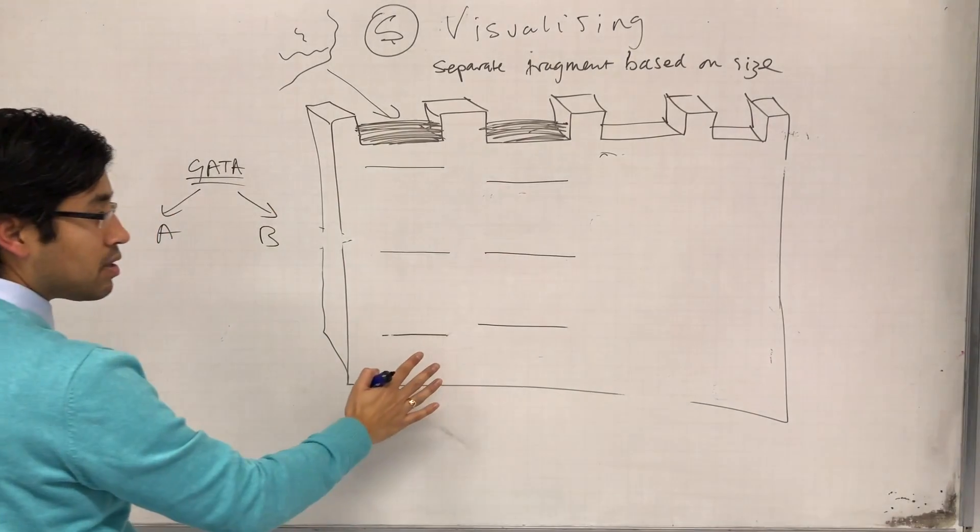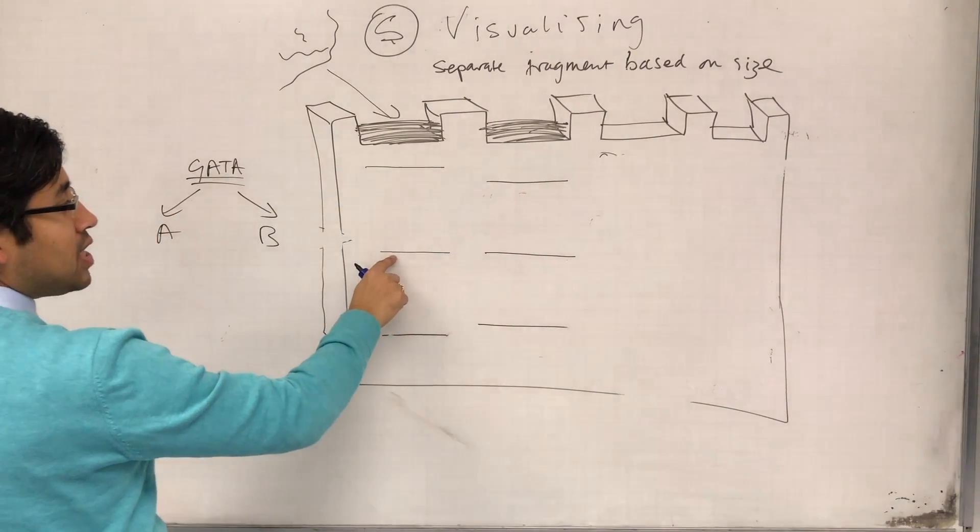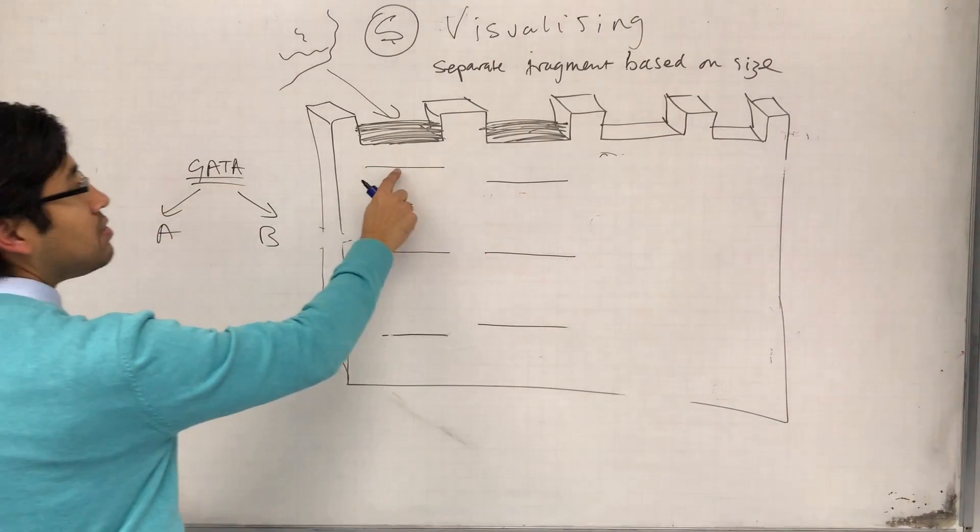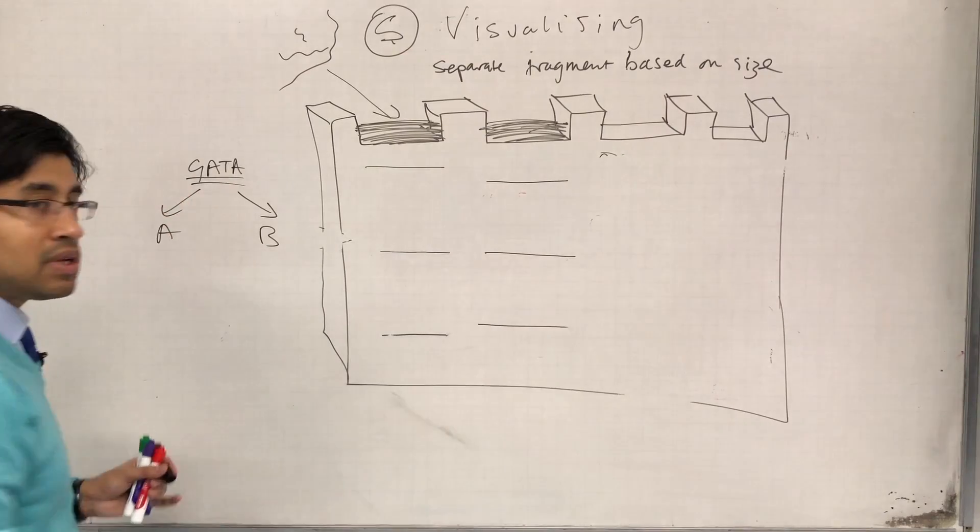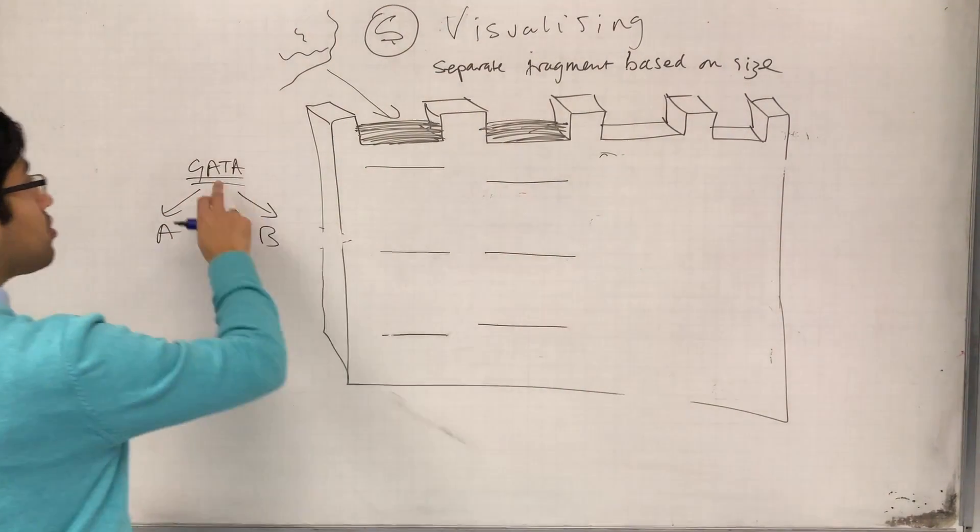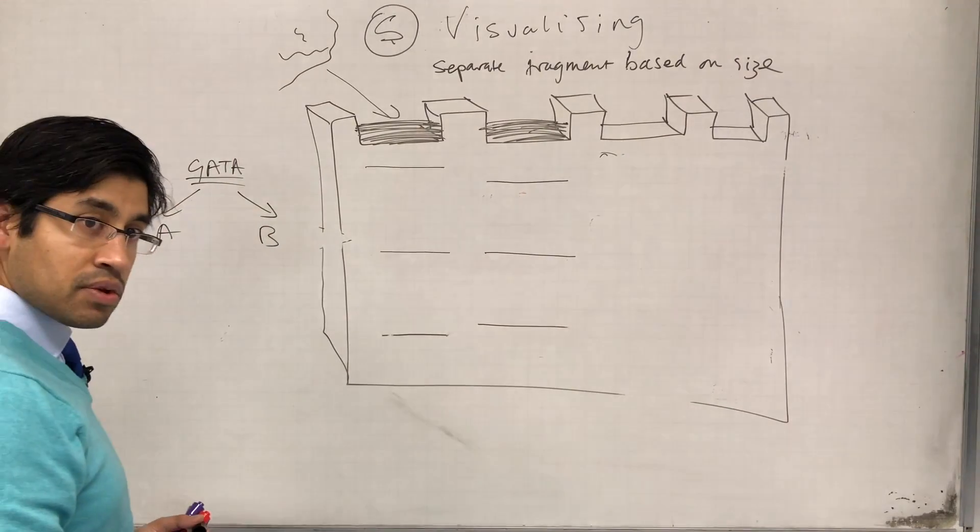Now, I've got these bands on my gel. Now, if GATA is in this sequence, then they're going to be the same. But if GATA is in this sequence, these two people might be different. So how do I know which of these bands corresponds to my GATA STR sequence?